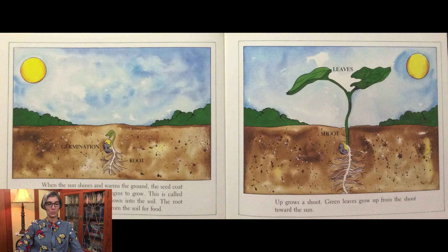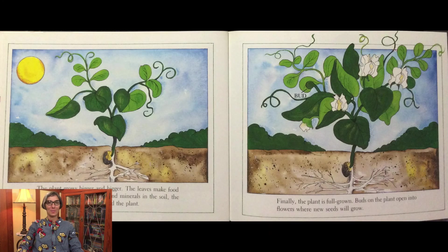A root grows down into the soil. The root takes in water and minerals from the soil for food. Up grows a shoot. Green leaves grow up from the shoot toward the sun. The plant grows bigger and bigger. The leaves make food for the plant from the water and minerals in the soil, the sunlight, and the air all around the plant.